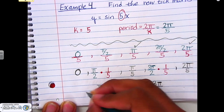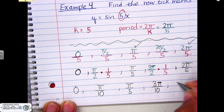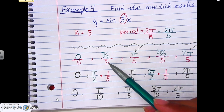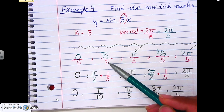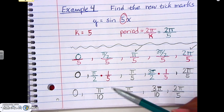Multiplying straight across gives us π/10 and 3π/10. The rest we bring straight down: 0, π/5, and 2π/5. So the new tick marks are 0, π/10, π/5, 3π/10, and 2π/5. That's all you have to do to find new tick marks. Rather than a separate practice, we're going to move straight into the next example to put it all together — finding k, the period, new tick marks, and graphing.